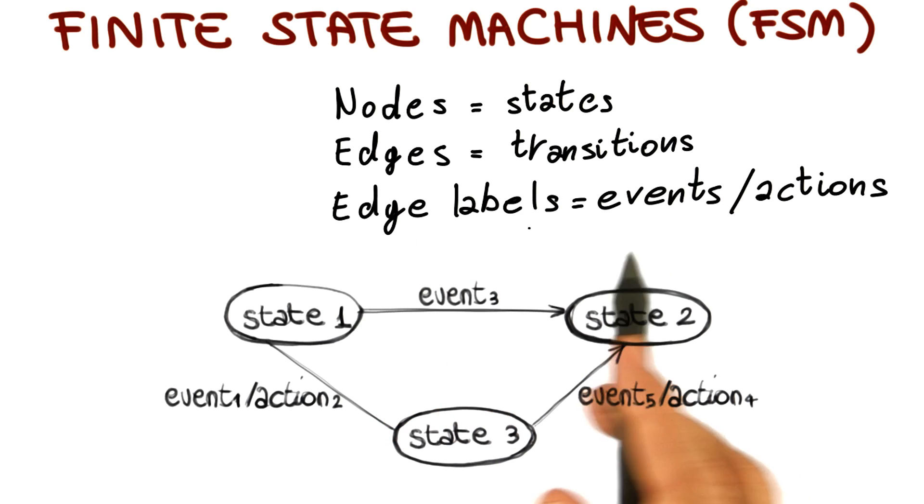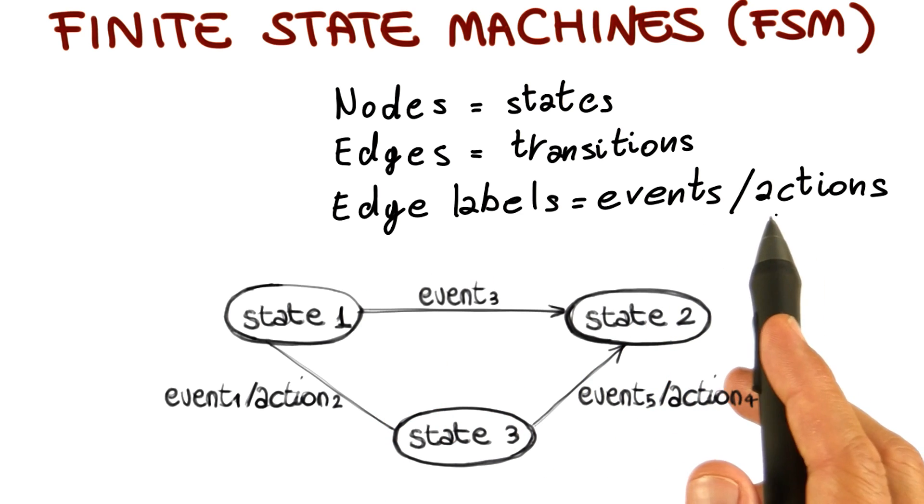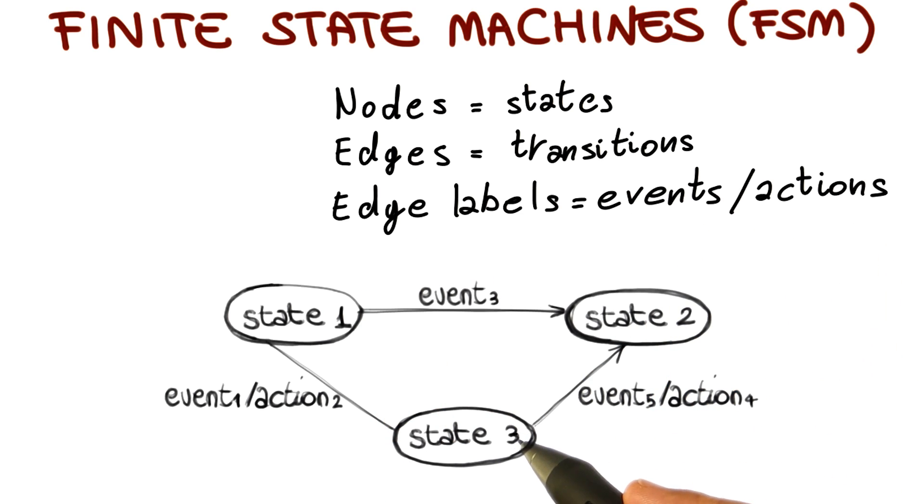And finally, the labels on the edges represent events and actions. For example, what this label means is that the system goes from state three to state two when event five occurs, and when going from state three to state two, it generates action four.